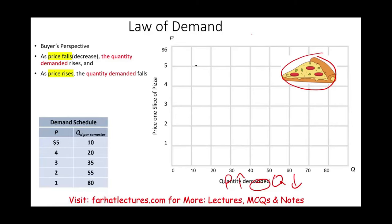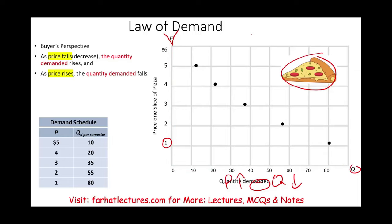Let's go ahead and graph this relationship. On the y-axis we have the price, and on the x-axis we have quantity. If the price of a slice of pizza is a dollar, you would buy 80 slices during the semester. Now if the price goes up from a dollar to two, you're going to have to cut down on your consumption — at two dollars you will consume only around 55 pizzas.